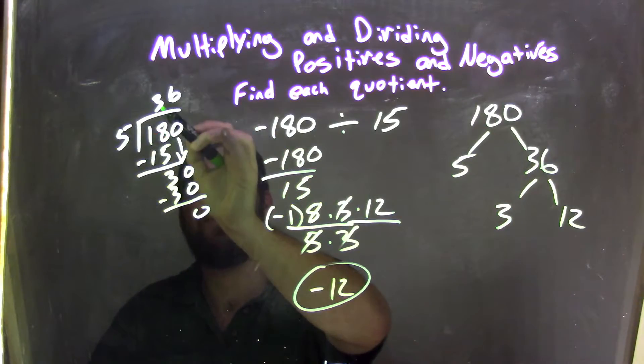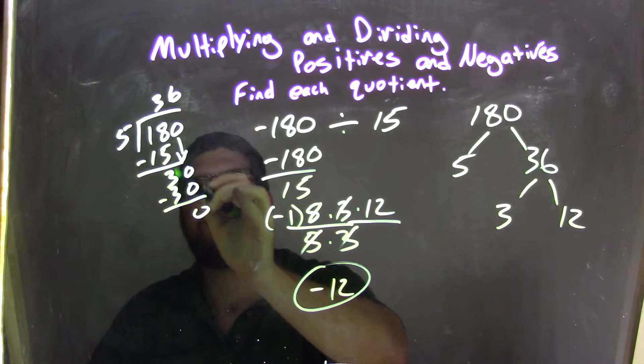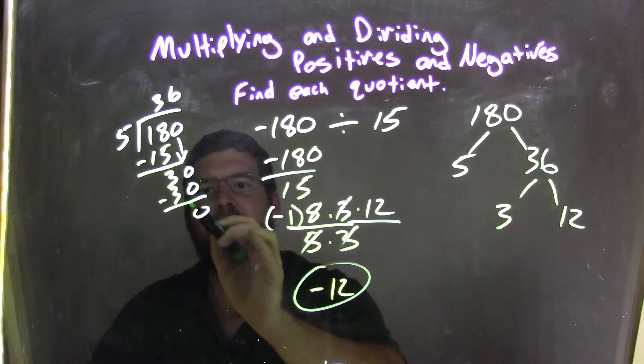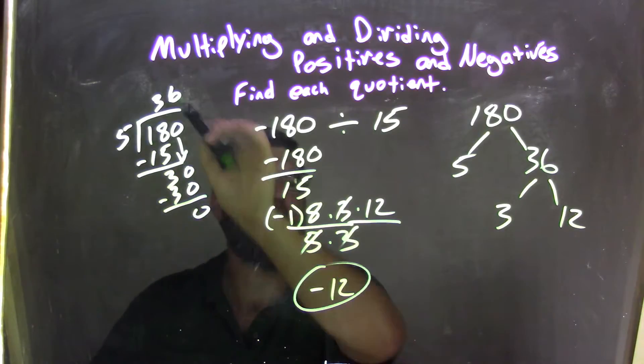Well, 5 turns out from long division, right here. 5 goes into 18, 3 times 15, right? Subtract them, we have 3, bring down the 0. 5 goes into 30 six times. 6 times 5 is 30. Subtract them to 0, we're good. 36.